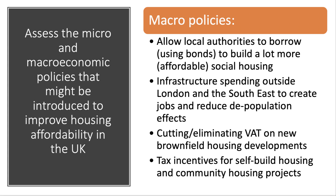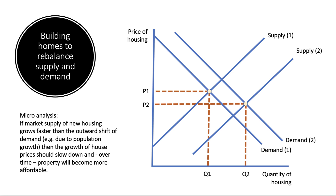So at a macro level, it's mainly fiscal policy in terms of trying to improve housing affordability. There are loads of analysis diagrams you could draw — I mentioned rent controls, I mentioned the government subsidy on new house building. Here's one particular approach: if the market supply of new housing grows faster — say we offer subsidies or encourage innovation in the industry — and if the supply of homes shifts out further than the demand shifts out due to population growth, then house price inflation should slow down and over time property will become more affordable.